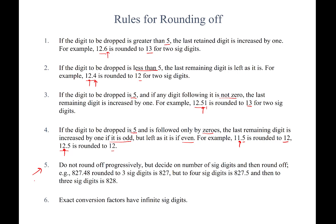Rule 5: never round progressively — this is a mistake learners often make. Determine how many significant figures you need, then round in one step. For example, 827.48 rounded to three significant figures: you drop the 4 (less than 5), so the answer is 827. If you first rounded to four figures (getting 827.5) and then to three (dropping 5, with 7 odd, rounding up to 828), you'd get a different answer. Always round in one shot. Rule 6: exact conversion factors have infinite significant figures and don't constrain your final answer.